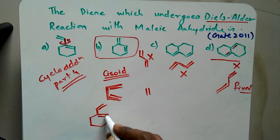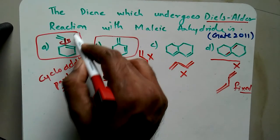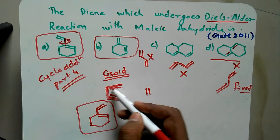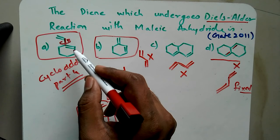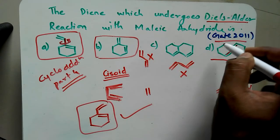This will give you the Diels-Alder reaction. So option A, since it is able to come in the cisoid condition with the double bonds in this way, only then it will give the Diels-Alder reaction. So option A is the correct choice. This question was from GATE 2011.